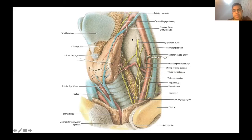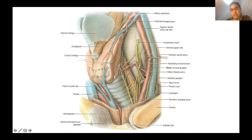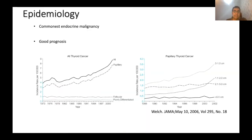The thyroid gland arises from the foramen cecum and descends to end in the neck. Surgically relevant structures include the recurrent laryngeal nerve and the external branch of the superior laryngeal nerve, which we aim to preserve during surgery. The parathyroids sit adjacent to the gland. The superior thyroid artery is a branch from the external carotid artery, and the inferior thyroid artery comes from the thyrocervical trunk. Importantly, there is a middle thyroid vein but no middle thyroid artery.